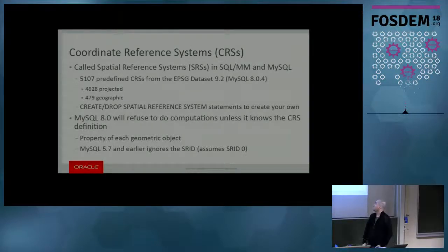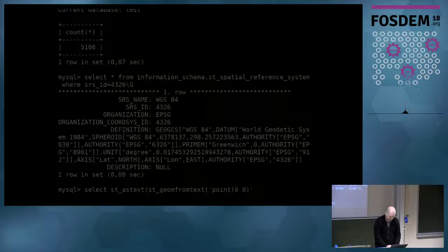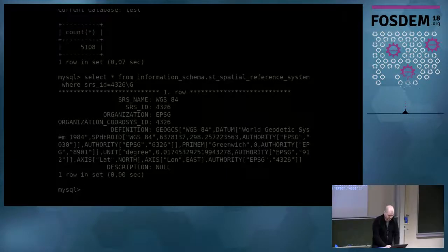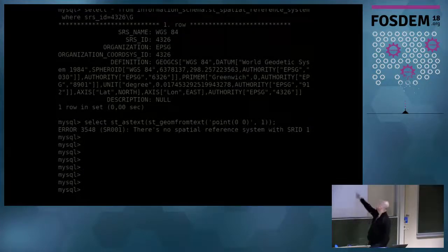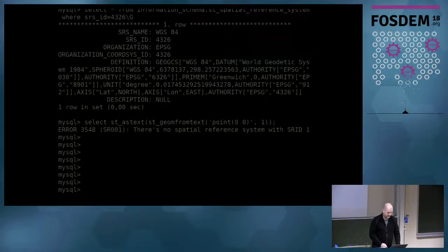MySQL 8 will refuse to do computations unless it knows the SRS definition. In 5.7 it wouldn't care. If you try to create a geometry using ST_GeomFromText with SRD 1, which is not defined — a non-existing SRD — you see the error: there is no SRS with ID 1. MySQL won't even create that point for you. In 5.7 it would do that, and that's the root of a lot of problems.